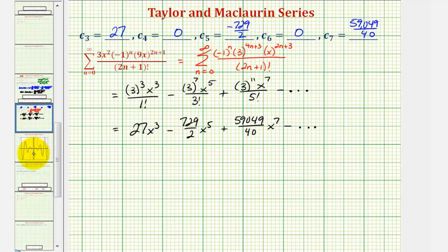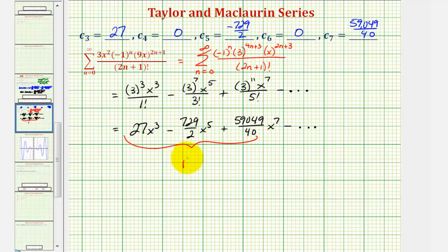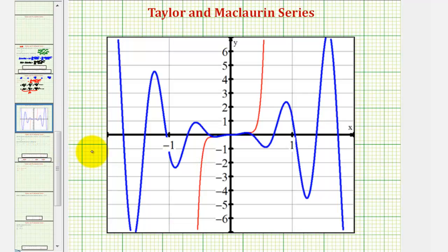Before we go, let's look at the graph of the original function and compare it to the graph of the polynomial function formed by using the first three terms of the Maclaurin series — this is called a Maclaurin polynomial. The original graph is in blue and the Maclaurin polynomial is in red. Notice that around x equals 0, where the Maclaurin series was centered, the red polynomial is a good representation of the original function in blue, and the more terms we add, the better the approximation would be.